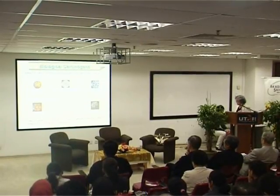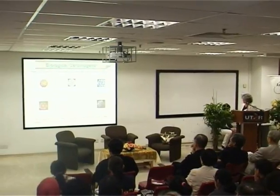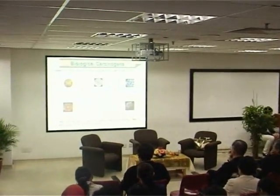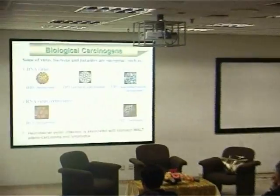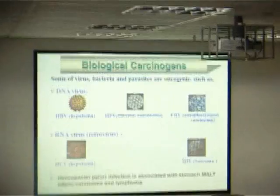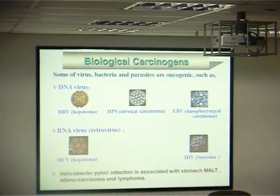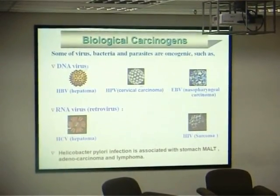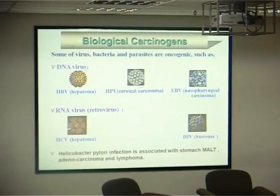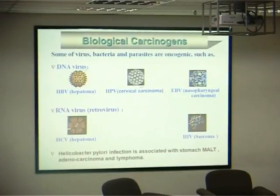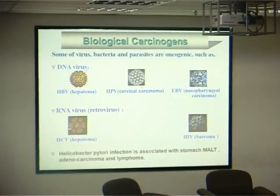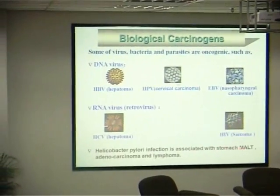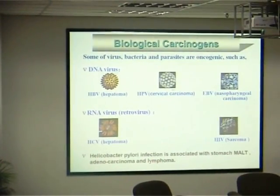Biological carcinogens include some viruses, bacteria, or parasites, such as DNA viruses including HPV and EBV. RNA viruses include HTLV and HIV. Some bacteria may be associated with stomach cancer and lymphoma.